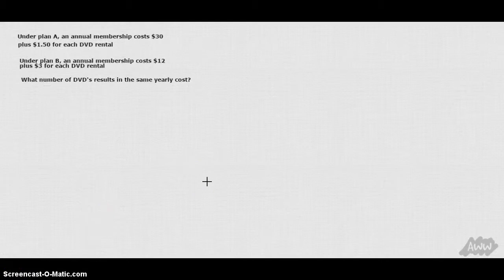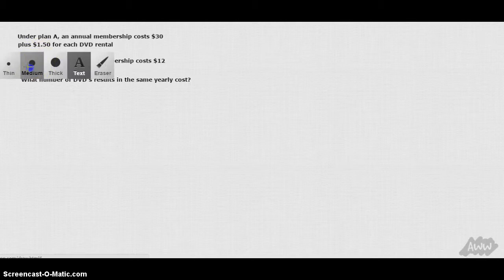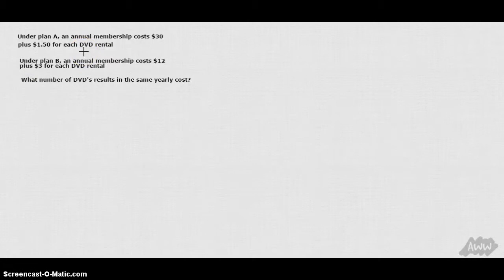Alright so let's look at a word problem solving equations with variables on both sides. Under plan A an annual membership costs $30 plus $1.50 for each DVD rental. Under plan B an annual membership costs $12 plus $3 for each DVD you rent. So what number of DVDs results in the same yearly costs?